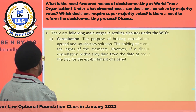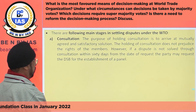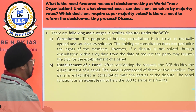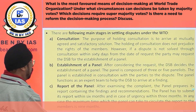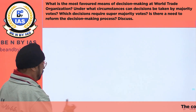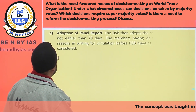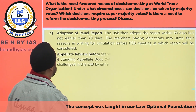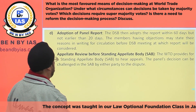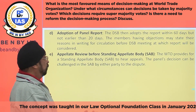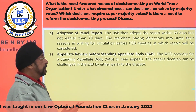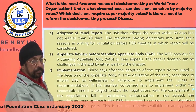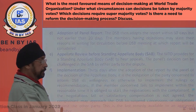The stages of dispute settlement are: first, consultation; then establishment of a panel; report of the panel; adoption of panel reports; then appellate review before a standing appellate body; and finally, implementation.